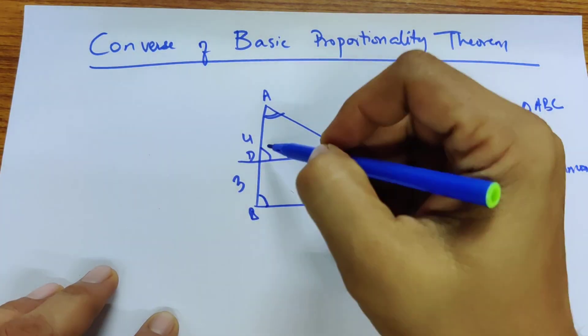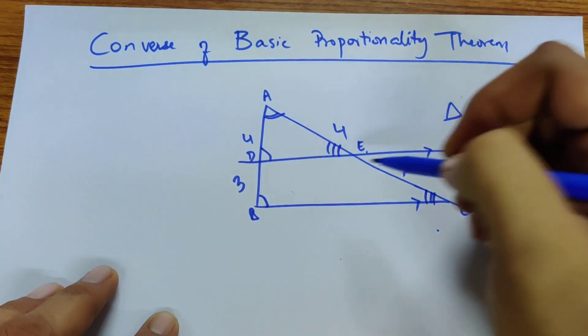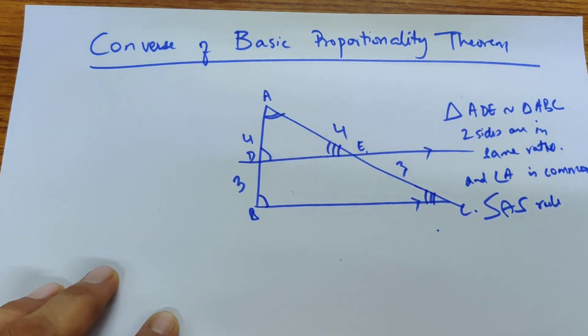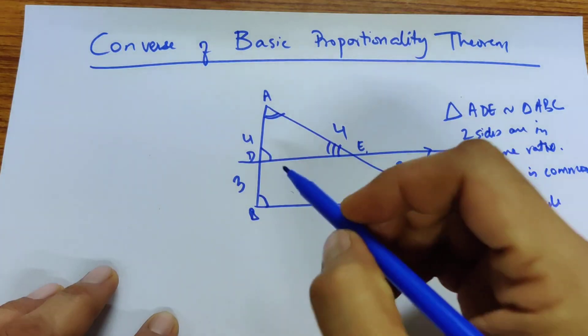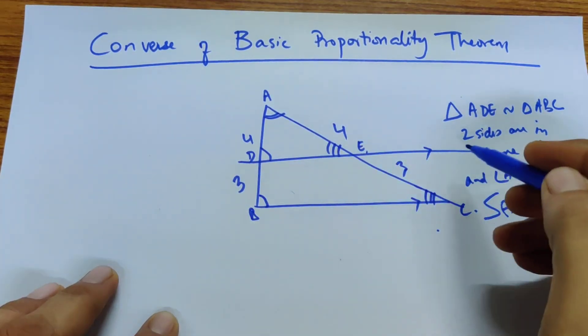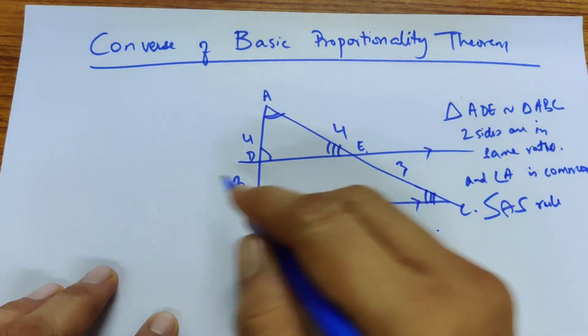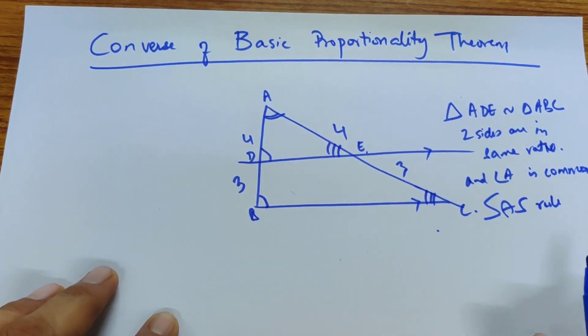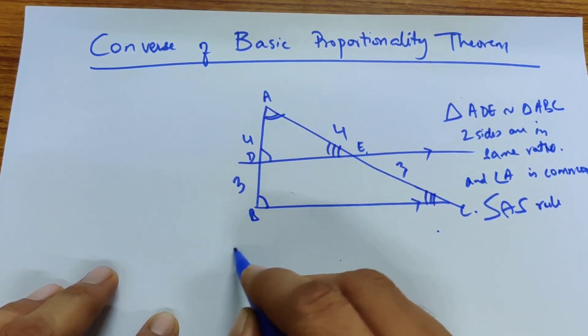And if both angles are equal, then they are corresponding angles, so this line is parallel to them, and the line that's going through DE is parallel to BC.